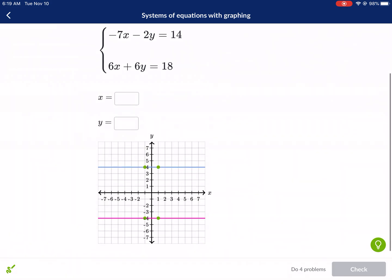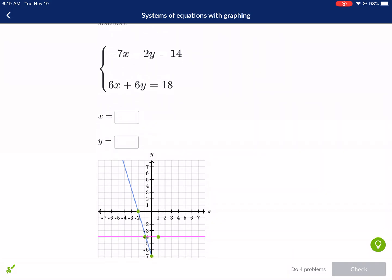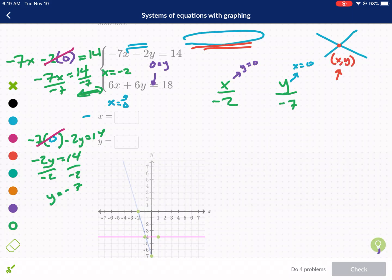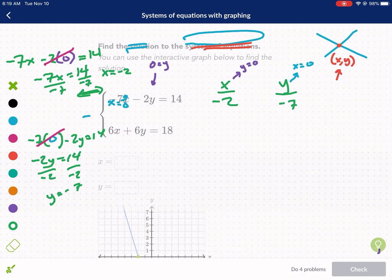So our x intercept was negative 2. Our y intercept was negative 7. So that's what our blue slash green line looks like. Okay so we just need to graph the intercepts. You just need two points to make a line. The easiest points to find are the x and y intercept. All right now we're working on the next one which in this case is the pink line.